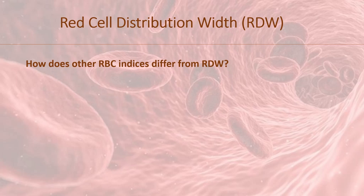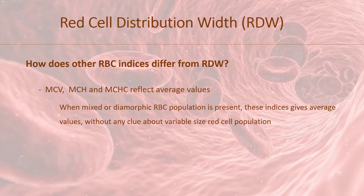How are other RBC indices different from RDW? Other indices like MCV, MCH, and MCHC reflect average values and may not adequately reflect RBC size or volume variation. It means that when mixed RBC or dimorphic RBC population is present, these indices just represent the average values, and these may be altogether normal, not giving any clue about the presence of varied size red cell population.